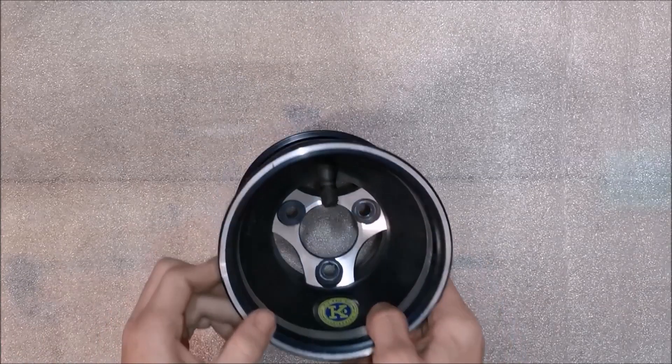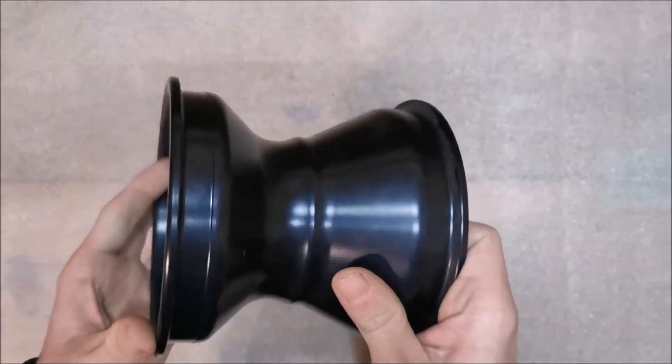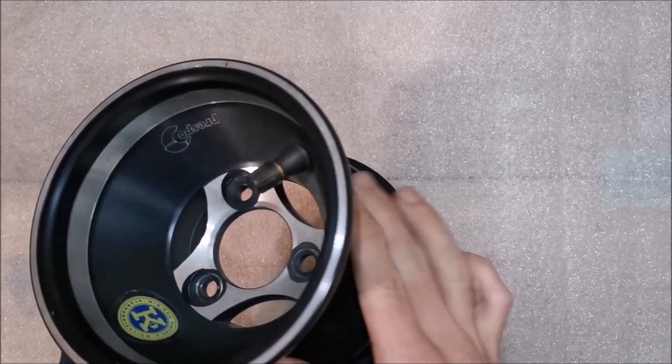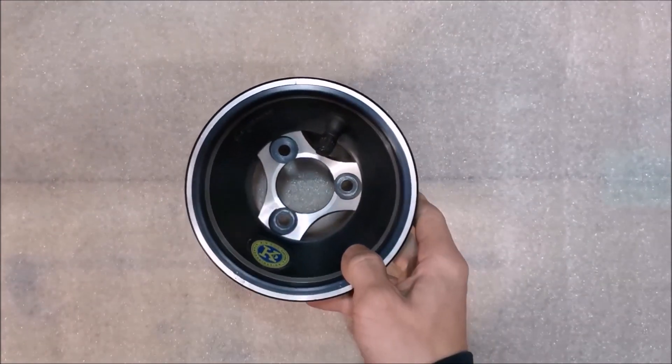Hey guys, today I want to show you how I make from this aluminum go-kart rim a carbon fiber rim with a two-piece mold which I made from aluminum.